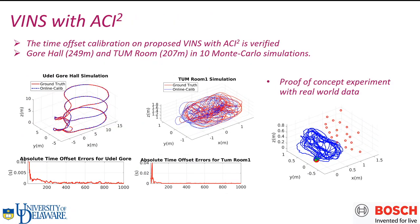In order to verify the performance of the system, we implement the VINS with ACI² in GTSAM with fixed-lag smoother. We leverage the OpenVINS simulator to test the system on EuRoC and TUM dataset in Monte Carlo simulations. You can see that the trajectory is very close to ground truth, and the time offset converges fast. We also provide a proof of concept experiments with real-world data.